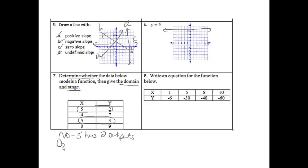And then the domain and range. The domain is going to be all of the x values. So it will be 5, 4, and 0. I don't need to list 5 again unless I want to. And the range is all the y values. So it will be 2, 7, 3, and 9.